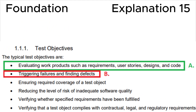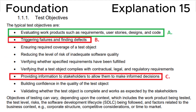Looking at section 1.1.1 Test Objectives in the ISTQB syllabus, we can see that the first point is evaluating work products such as requirements, user stories, design and code. This is fully consistent with the correct answer A and relates to the test design starting during the requirement definition. We can also see answers B and C referenced in the syllabus, but those two test objectives do not relate to the test design stage of the STLC — Software Testing Life Cycle.